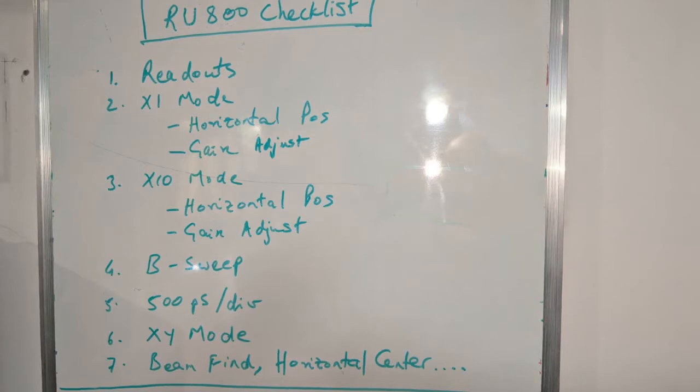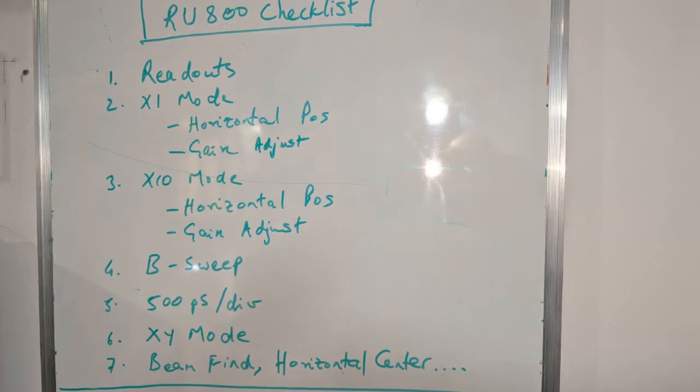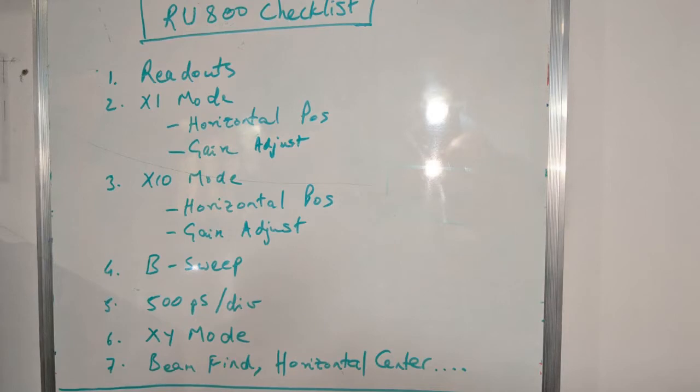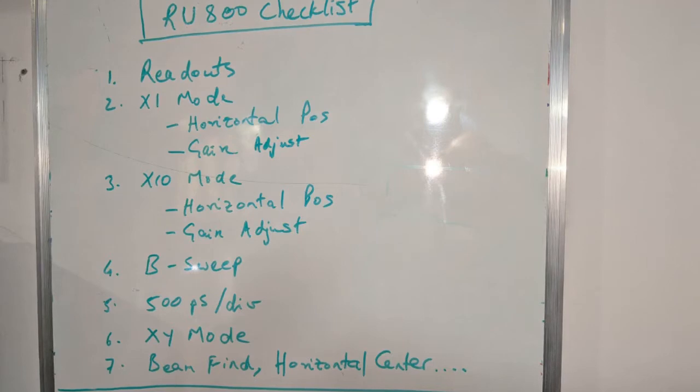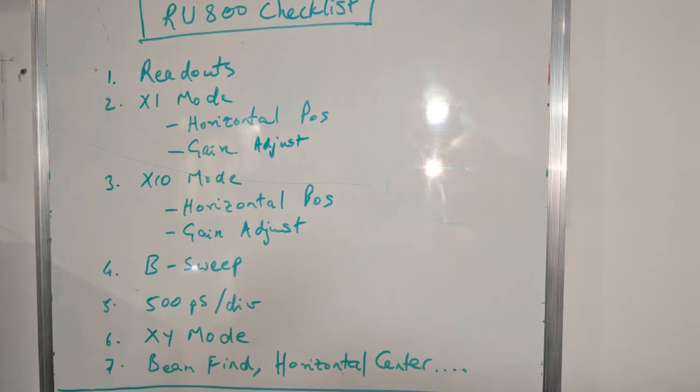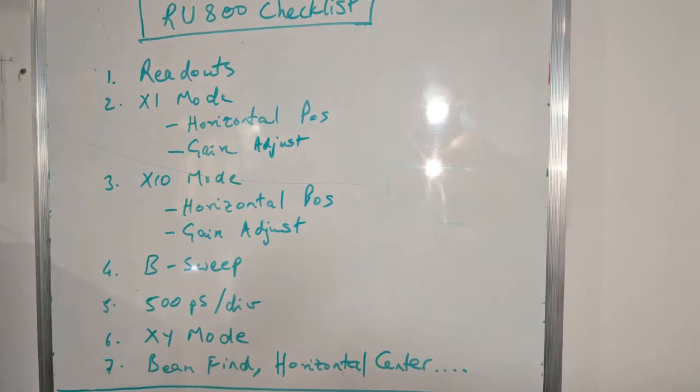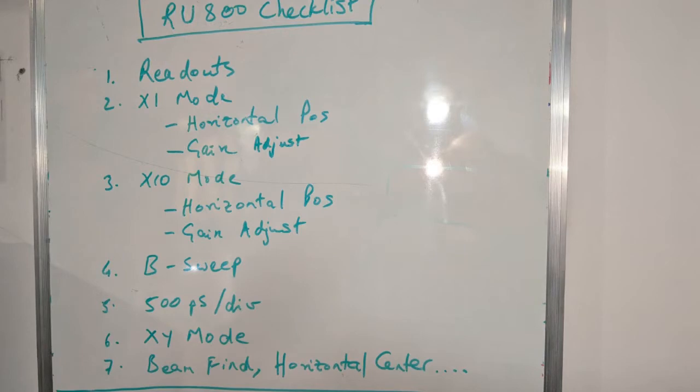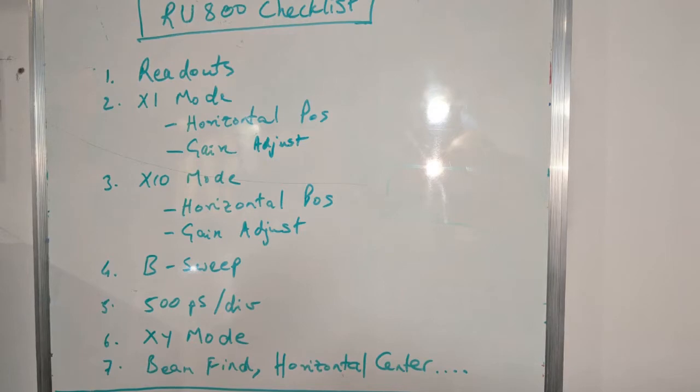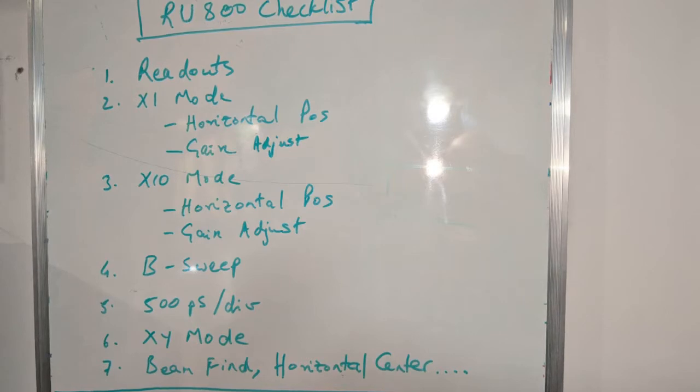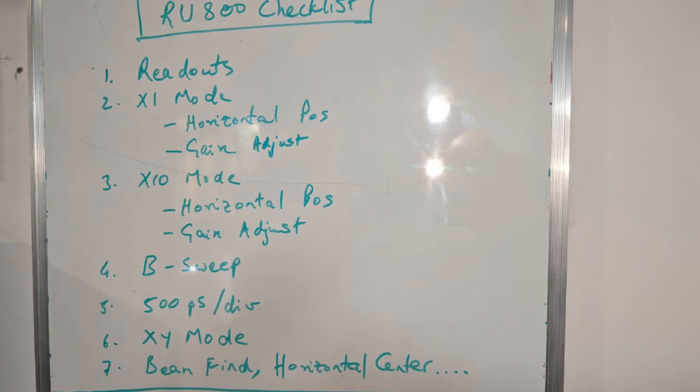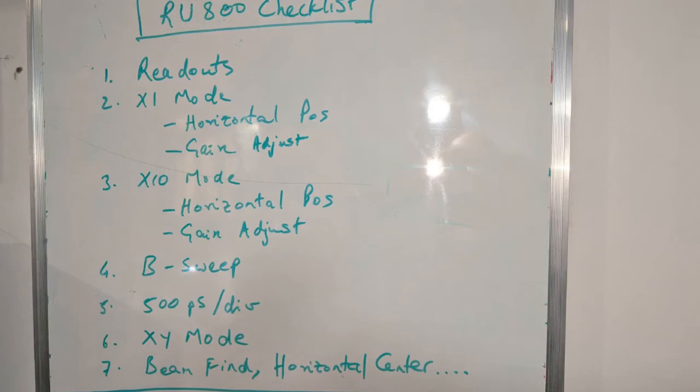The B sweep should work as intended. In the 500 picoseconds per division mode, which is the fastest sweep of the oscilloscope, we should see sufficient linearity. The XY mode should work as expected, and last but not least, the utility functions such as the beam find and the horizontal center trimmer on the main board should work the way they do with the original U800 chip. How well does the RU800 do on this checklist? Let's take a look. To fast forward to specific sections of this video, use the timestamps mentioned in the video description.